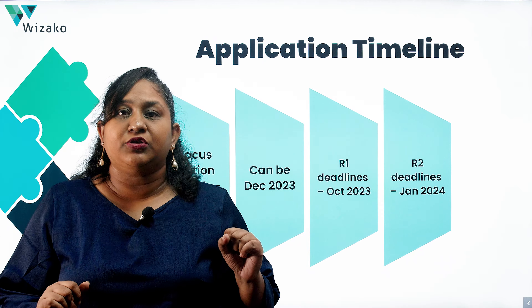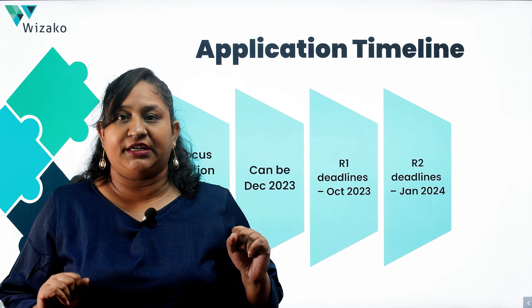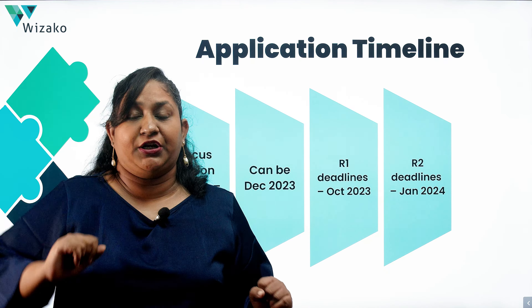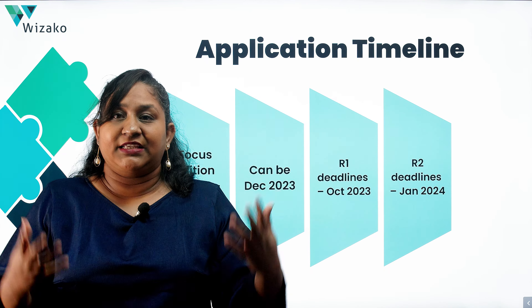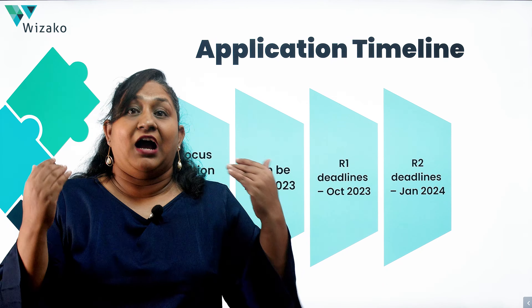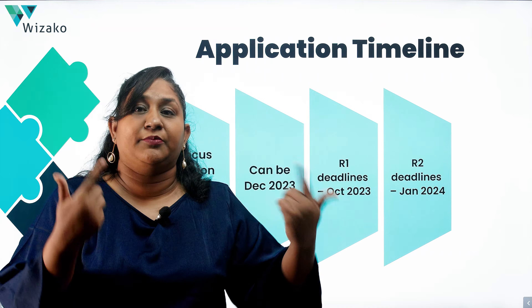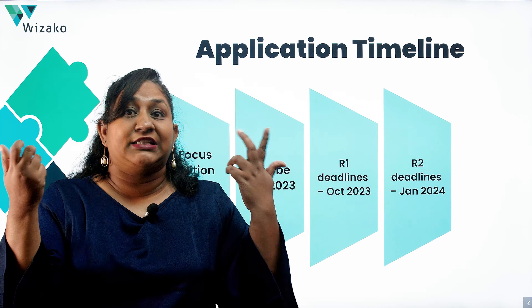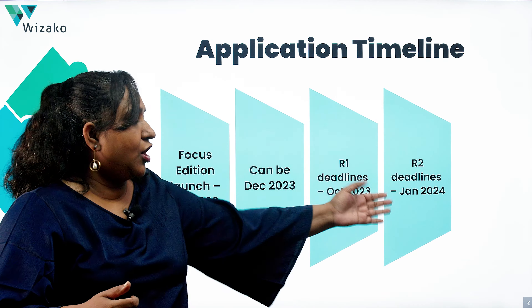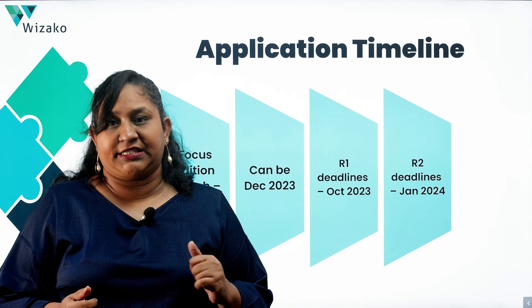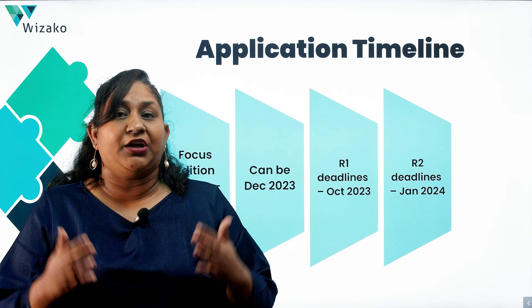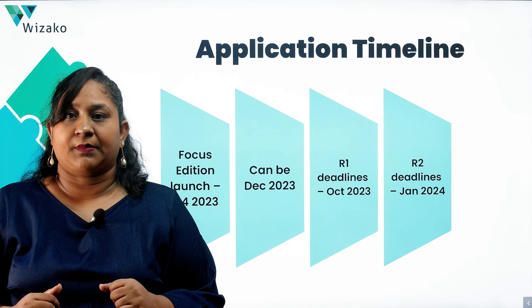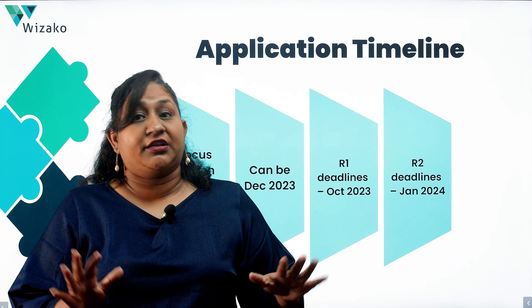A lot of the time, your choice of schools depends on your GMAT score. You'll target a certain set of schools if your score is in the 720–730 range, but if it's in the 690 range, some will decide to rewrite while others will adjust which schools they apply to in order to maximize their chances. If the schools you're applying to are likely to change based on your score, you won't have time to catch Round 2 deadlines if you write your GMAT by the end of December. You may not have the bandwidth to choose the Focus Edition at all if you're targeting certain schools.